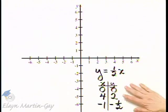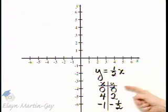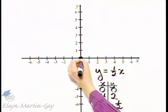Now let's plot these three ordered pair solutions. Zero, zero, that is the origin, right here.